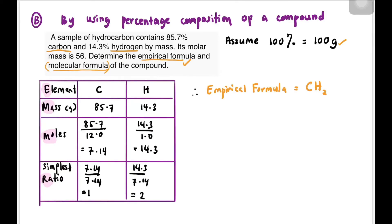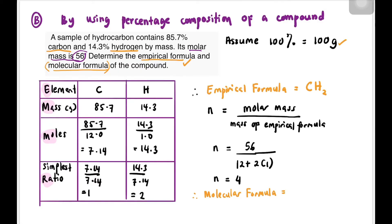The question also asks us to find the molecular formula. To find molecular formula, we need to find the integer value n. n equals molar mass divided by mass of empirical formula. In the question, they gave the molar mass which is 56. So we put in the formula: 56 divided by the empirical formula mass, which is 1 carbon plus 2 hydrogen, so 12 plus 2 times 1 equals 14. We get n equals 4. So the molecular formula equals CH2 bracket times 4, which equals C4H8.